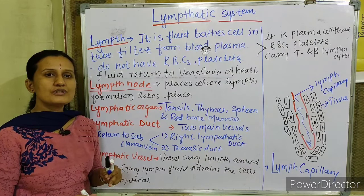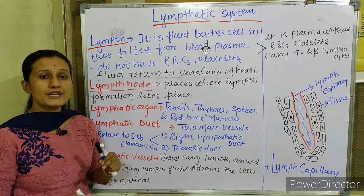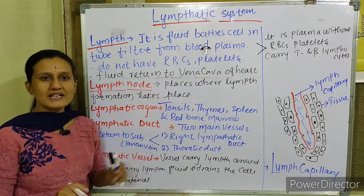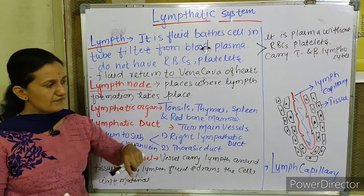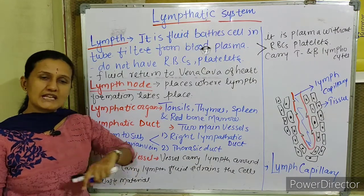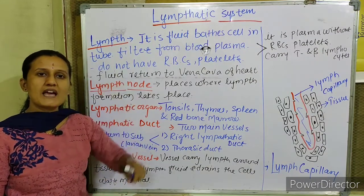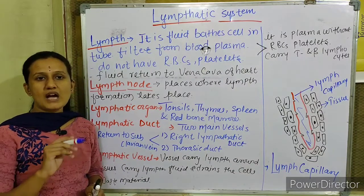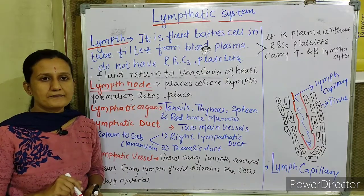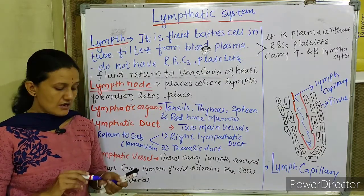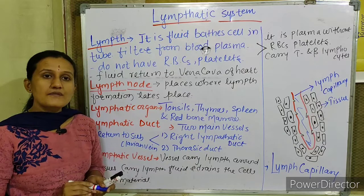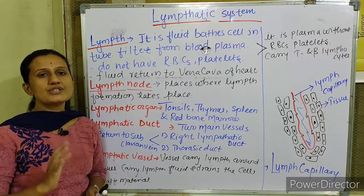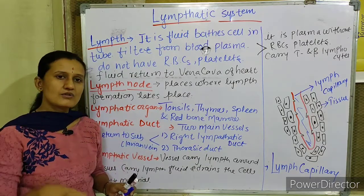When the osmotic pressure inside the lymphatic capillary is high due to drainage of fluid, the pores automatically get enclosed and that lymphatic capillary carries the waste material to the subclavian vein — to the blood vascular system, to the heart. Therefore the lymphatic system is also called the drainage system of the body.